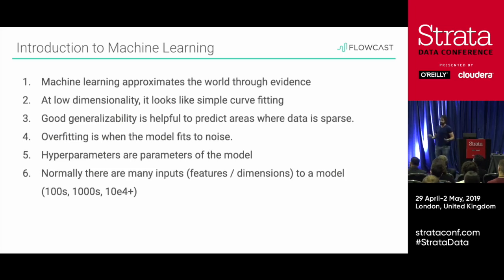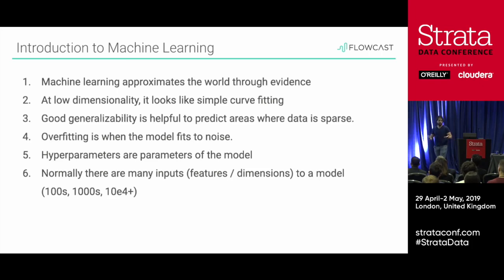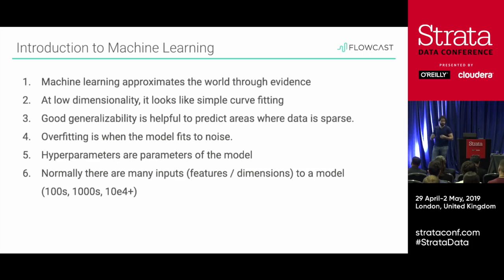Machine learning essentially is approximating the world through evidence. At very low dimensionality it looks like curve fitting, and that's really what it is. When we talk about generalizability, we're really trying to predict areas of your feature space of data where data is actually sparse — it might even be non-existent, and it's generally going to be hard to tell how performant that model will be. But around areas where data is fairly sparse, we can, with some testing, tell how well that model is generalizing.